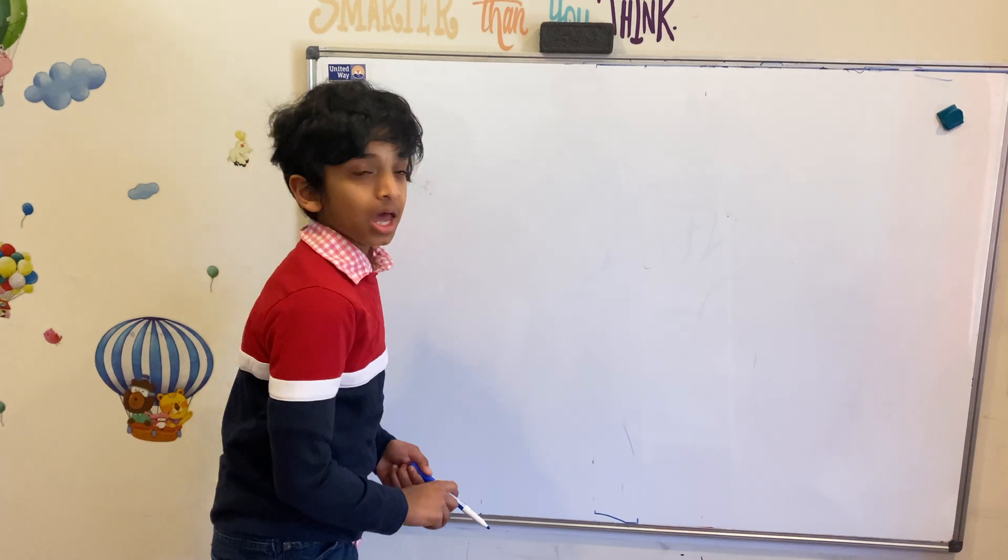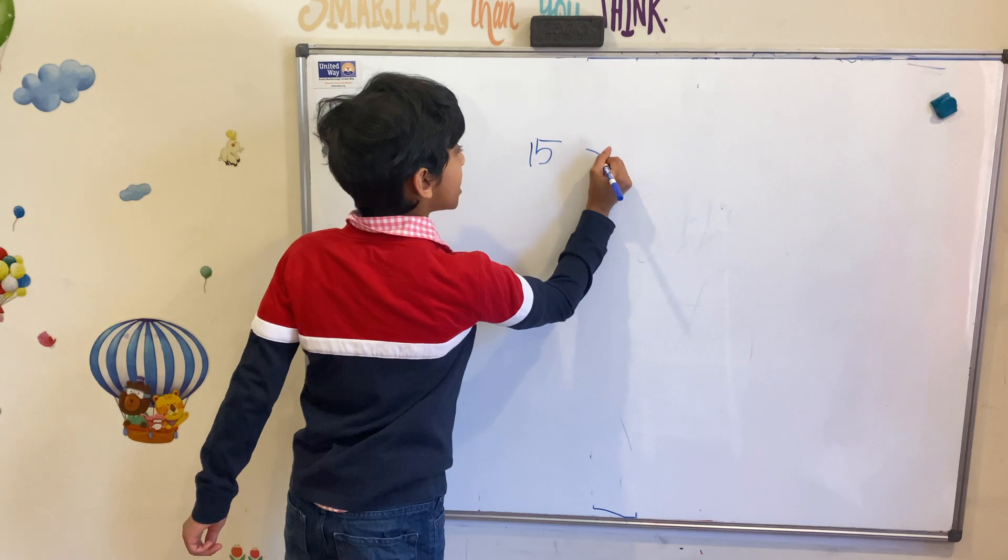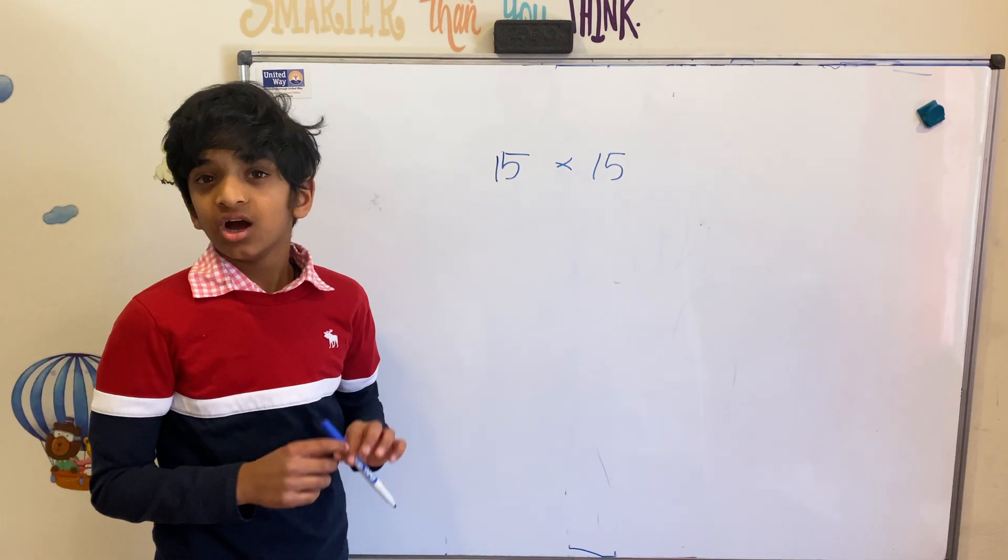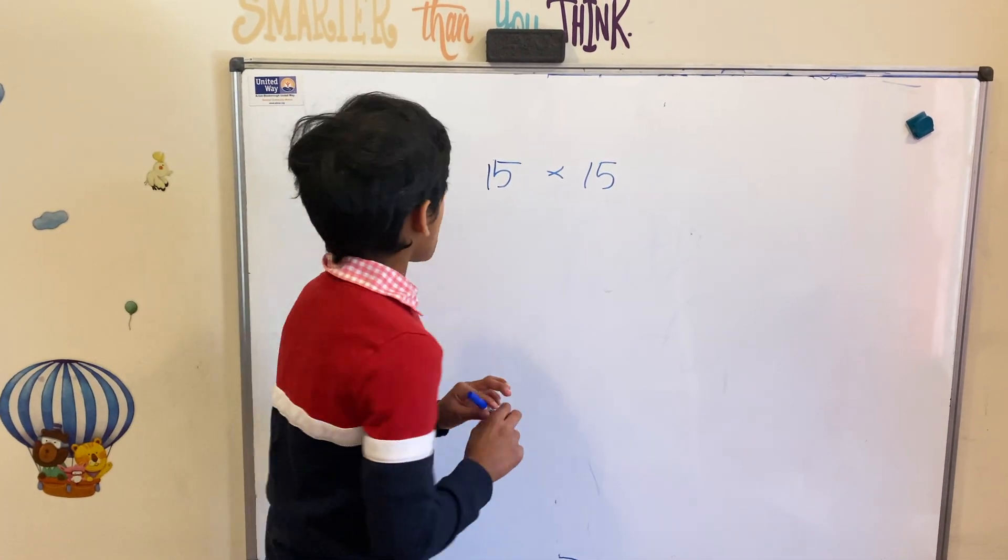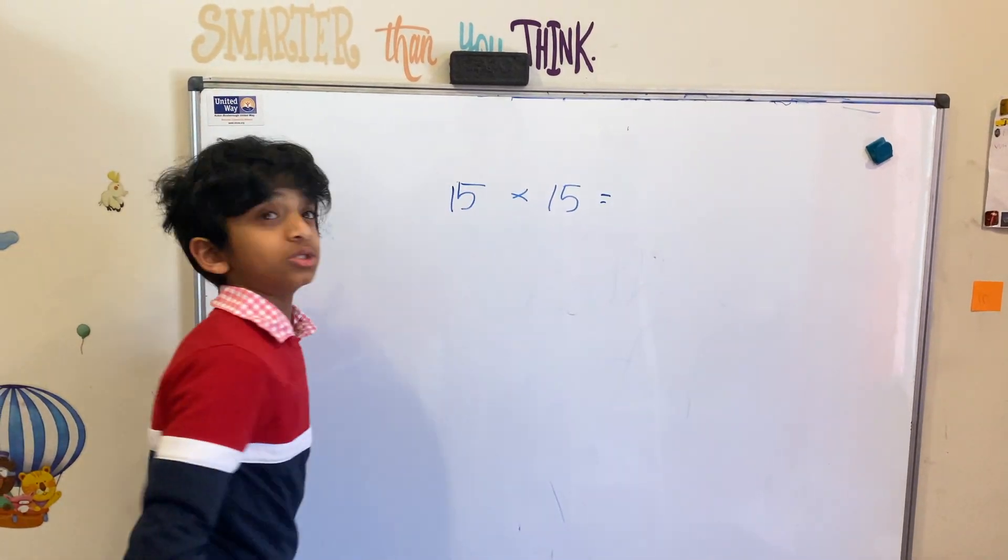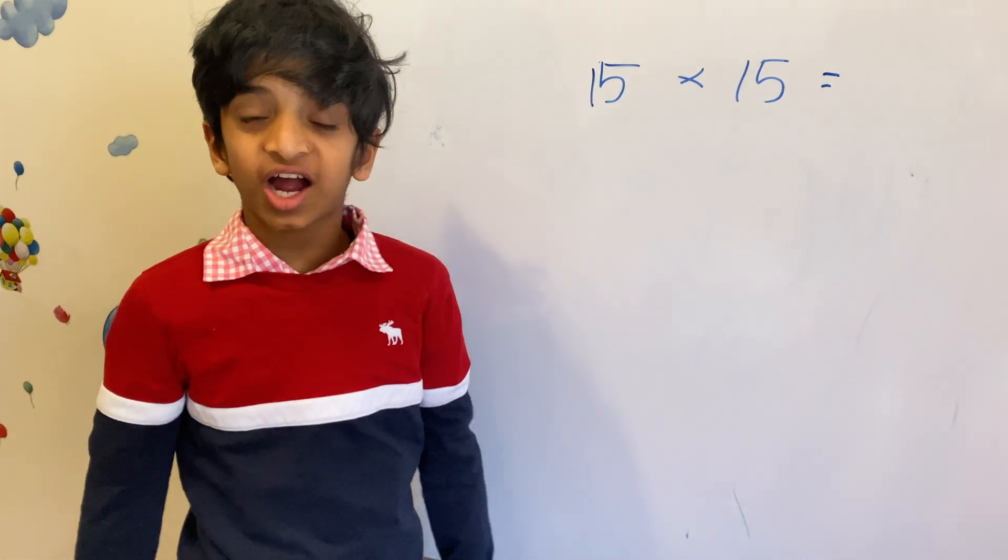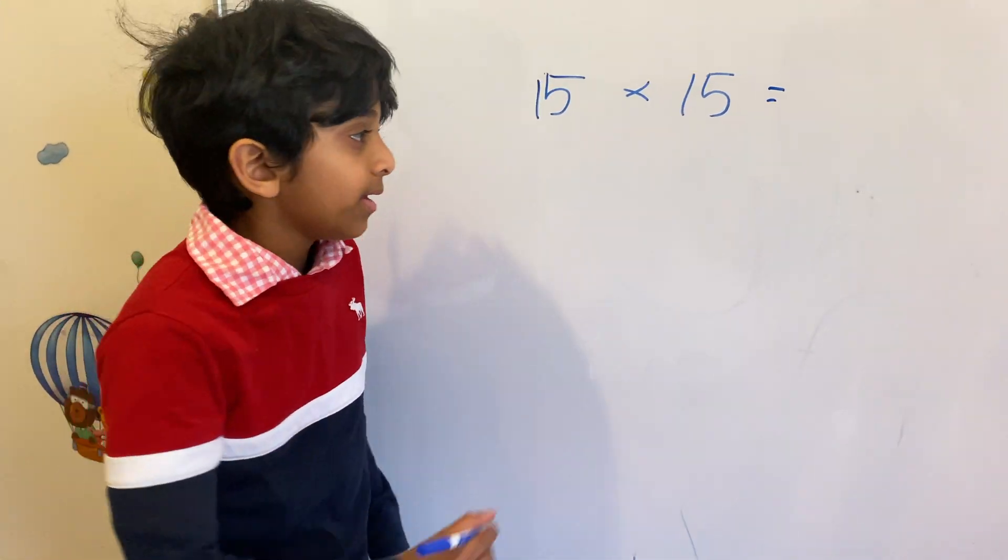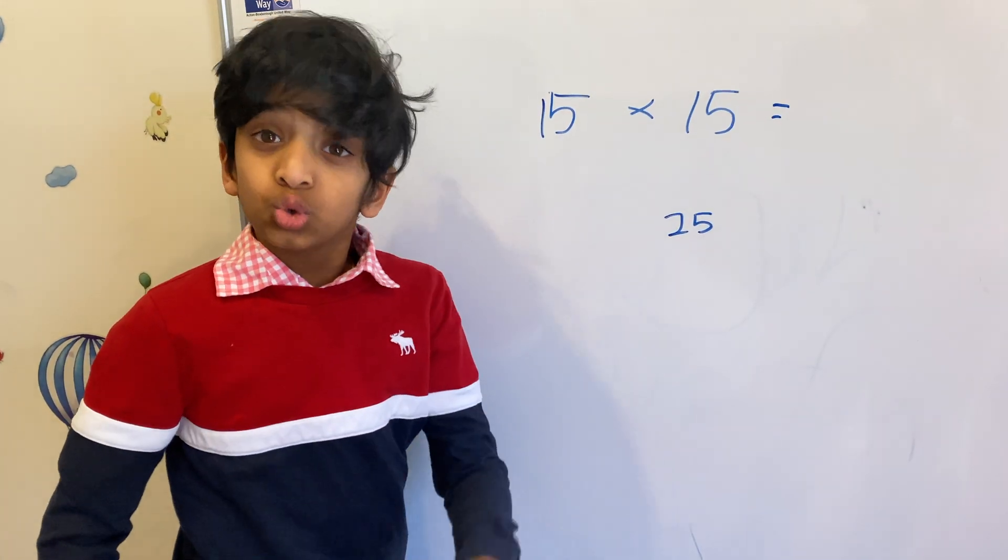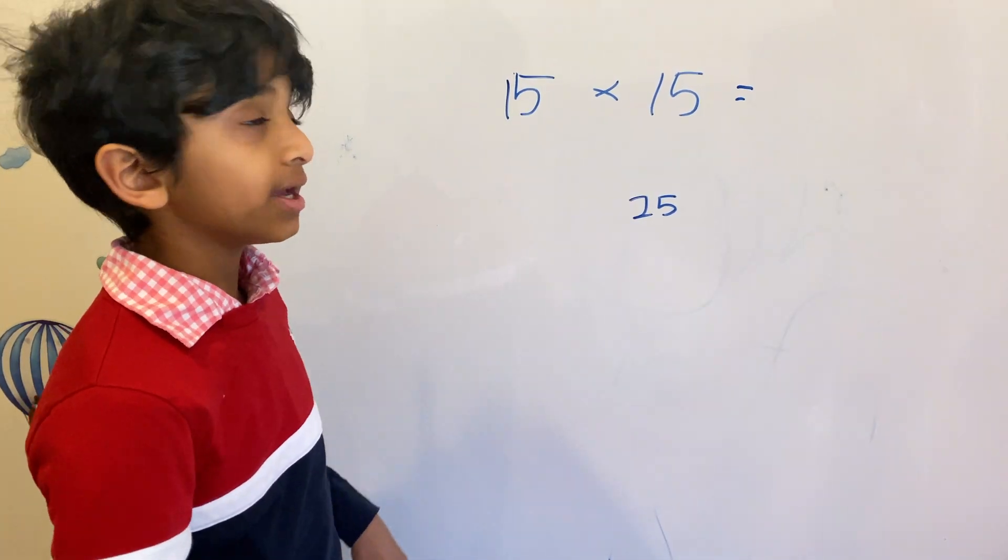Let's do an example. Simple one. Let's start with 15 times 15. 15 squared is 15 times 15. So let me show you the trick. You always know 5 times 5 is 25, so we can just say 25 is the last numbers. Remember, 25 is always the last two numbers when you do this trick.